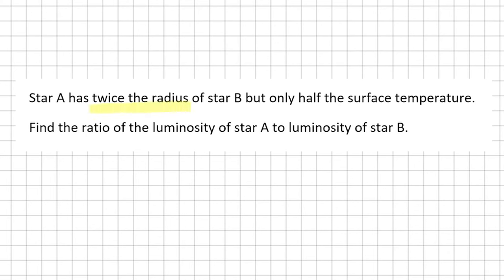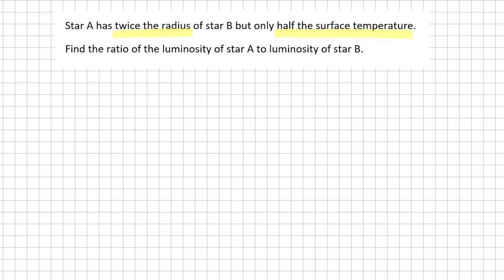Star A has twice the radius of star B, but only half the surface temperature. Find the ratio of the luminosity of star A to luminosity of star B. Some of you might be able to do this question directly in your head, but I'm going to do this step by step, showing you the method.